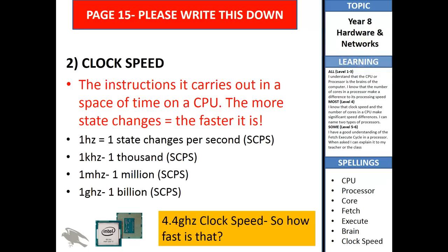The more state changes, the faster it is. So if you had a one hertz processor, it would carry out one state change per second. If you had a one gigahertz processor, it would do a billion state changes. You can get four, five, six, seven, eight gigahertz processors these days, and the higher the number, the faster it will process instructions.